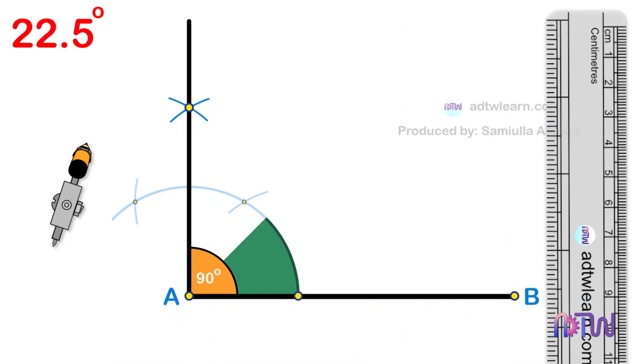Half of these 90 degrees will be 45 degrees. To divide this angle, take a compass and using these two intersection points as a center, cut the arcs as shown.